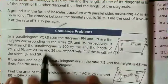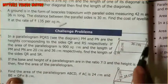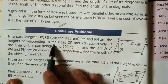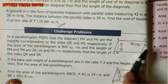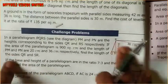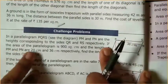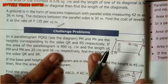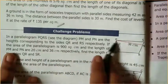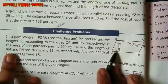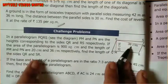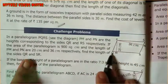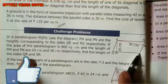In parallelogram PQRS, PM and PN are the heights corresponding to two sides. If the area of the parallelogram is 900 square centimeters, the length of PM is 20 centimeters and PN is 36 centimeters, then find the length of sides QR and SR.